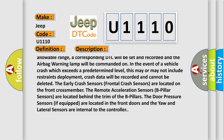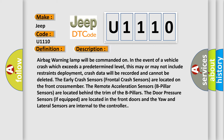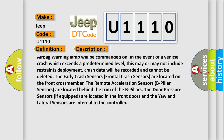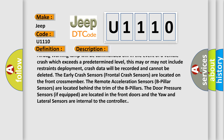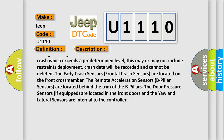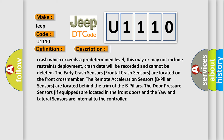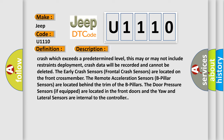In the event of a vehicle crash exceeding a predetermined level, this may or may not include restraints deployment. Crash data will be recorded and cannot be deleted. Frontal crash sensors are located on the front cross member. B-pillar sensors are located behind the trim of the B-pillars. Door pressure sensors, if equipped, are located in the front doors, and the yaw and lateral sensors are internal to the controller.